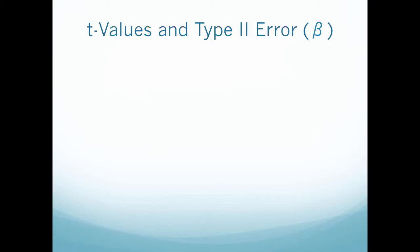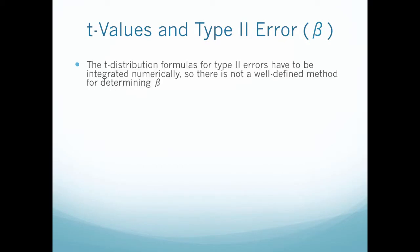Now let's move on to the difference with our t statistic. With the t value, it's a little different. The t distribution formulas for type 2 errors have been integrated numerically, so there's not really a well-defined method for determining beta. With the z distribution we have formulas, but for the t distribution it's a little different.